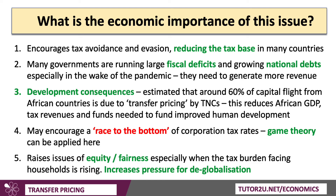Transfer pricing also has consequences for development. It's estimated that around 60% of capital flight from African countries is due to transfer pricing by TNCs. That means tax as a share of GDP is pretty low in many lower-middle-income countries, which reduces African GDP, reduces fiscal revenues for government, and deprives governments of funds needed to improve basic human development — be it education, housing, or health.